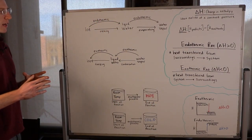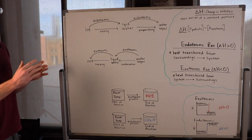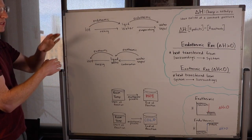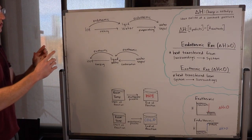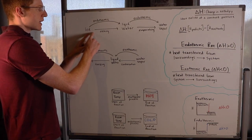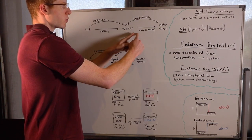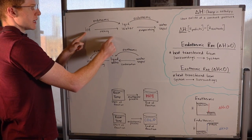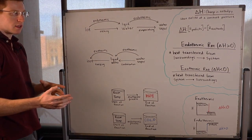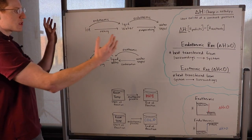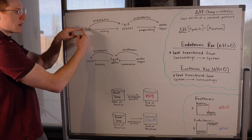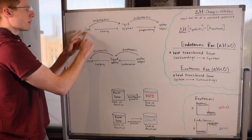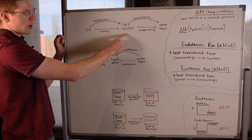Now I want to talk about how you can tell whether a phase change is endothermic or exothermic. I've written that here using water as the substance, but this works for any substance. When you melt ice into liquid water, you're putting heat from the surroundings into the system — that is an endothermic process. So melting ice is actually an endothermic process.